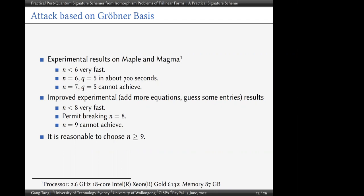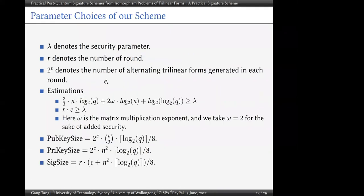For parameter choices: lambda denotes the security parameter, r denotes the number of rounds, and s denotes the number of alternating trilinear forms generated per round. We have the estimate r · s ≥ lambda. We also have formulas for public key size, private key size, and signature size. Based on Gröbner basis attack analysis, we choose reasonable r and s to balance public key, private key, and signature sizes.